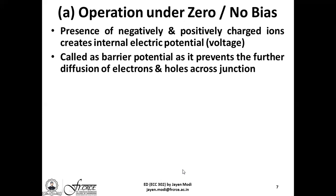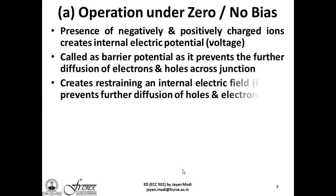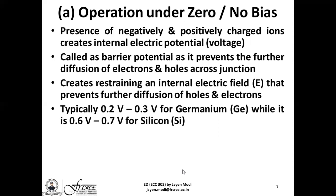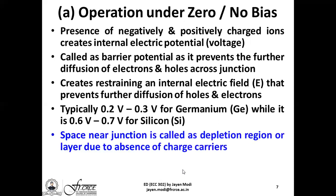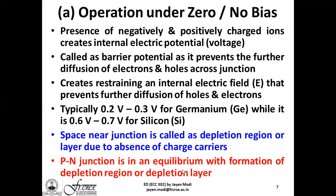This depletion region creates an internal electric potential called the barrier potential, since it prevents further diffusion of electrons and holes across the PN junction. It is typically 0.2 to 0.3 volts for germanium, while the value is between 0.6 to 0.7 volts for silicon. The space near the junction devoid of free carriers is called the depletion layer or depletion region. Thus the PN junction is in an equilibrium state with the formation of the depletion region.